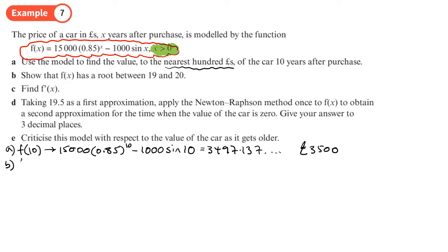In part b, if we want to show that there's a root between 19 and 20, we need to work out f of 19 and f of 20. So I'm actually just going to go back to what I just typed in and change the 10 to 19 in the power and change the sine 10 to 19 rather than type the whole thing in again. That gives me 534.11, so something that's greater than zero. And just go back again and change the 19 to a 20. That gives negative 3331.55, so that's less than zero.